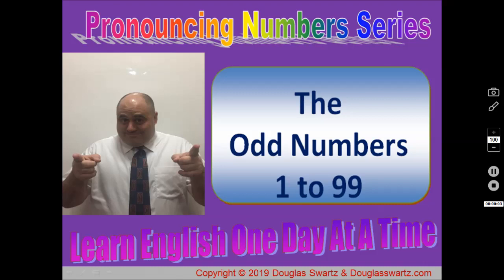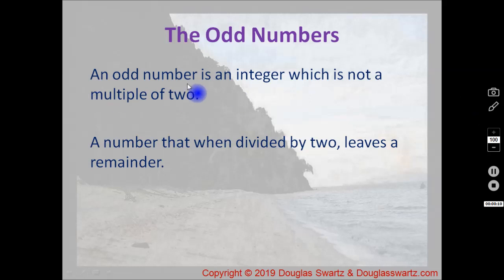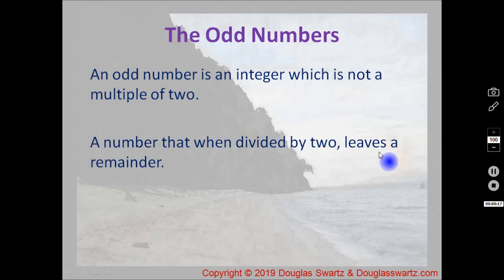Hello and welcome back to the Pronouncing Numbers series. The title for this video is The Odd Numbers 1 to 99. An odd number is an integer which is not a multiple of 2 — a number that when divided by 2 leaves a remainder.